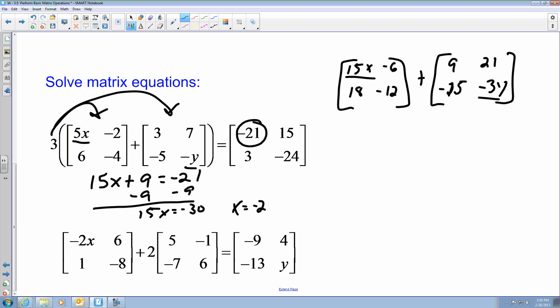Now when I use my y value, I say negative 12 plus negative 3y equals negative 24. Again, I got the bottom right corner plus the bottom right corner here gives me the result of the bottom right corner of this matrix. So I can add 12 to both sides, which gives me negative 3y equals negative 12 and my y equals 4. So my x equals negative 2 and my y equals 4.